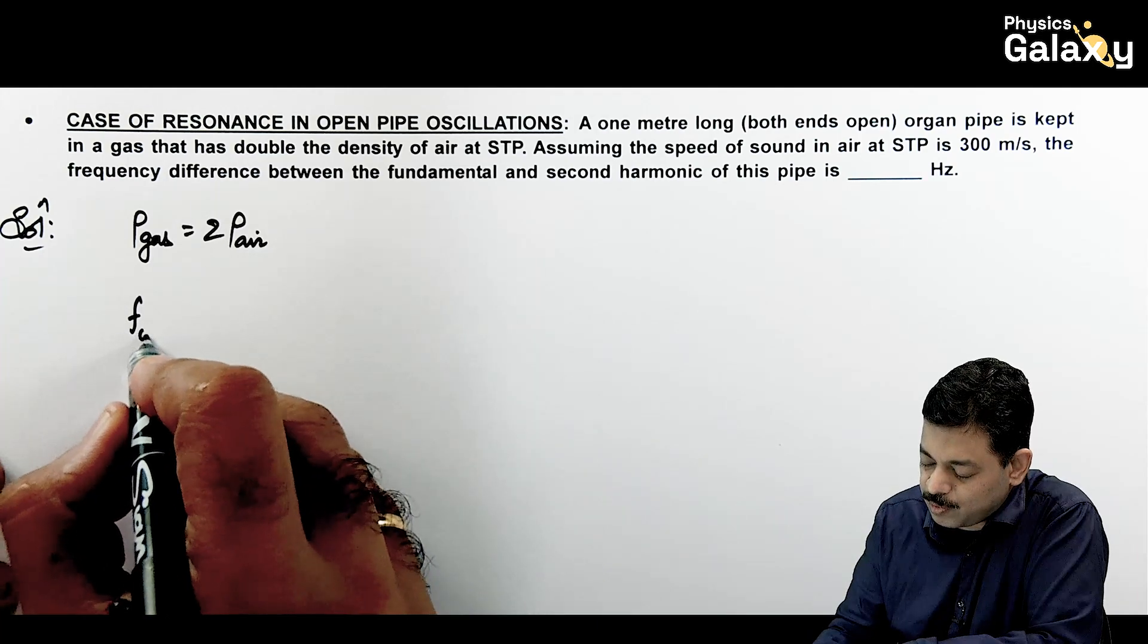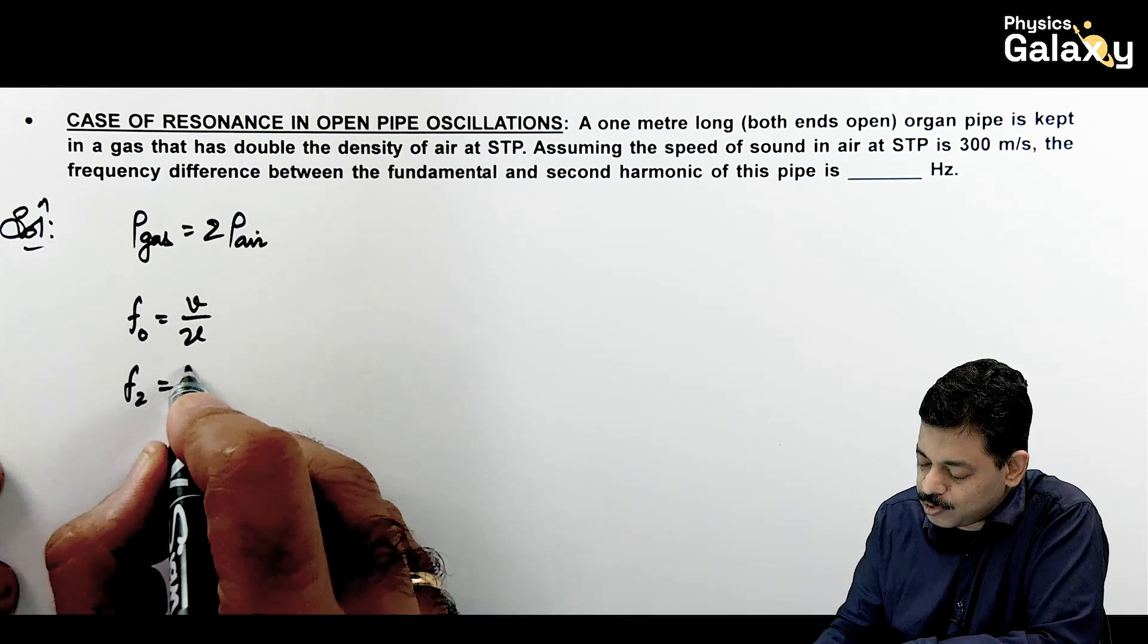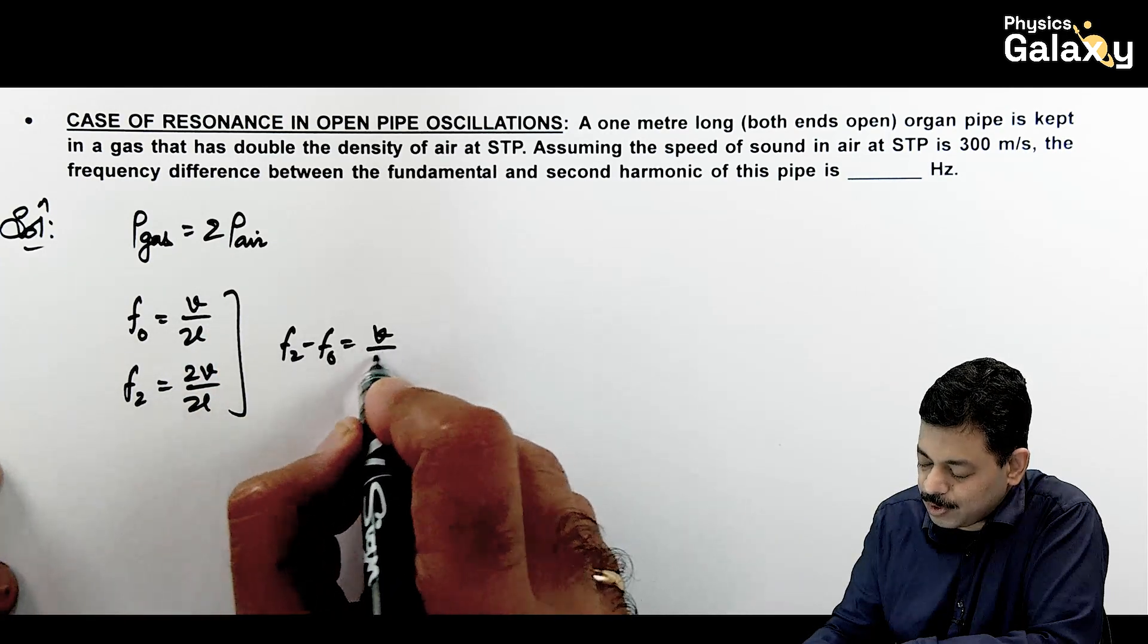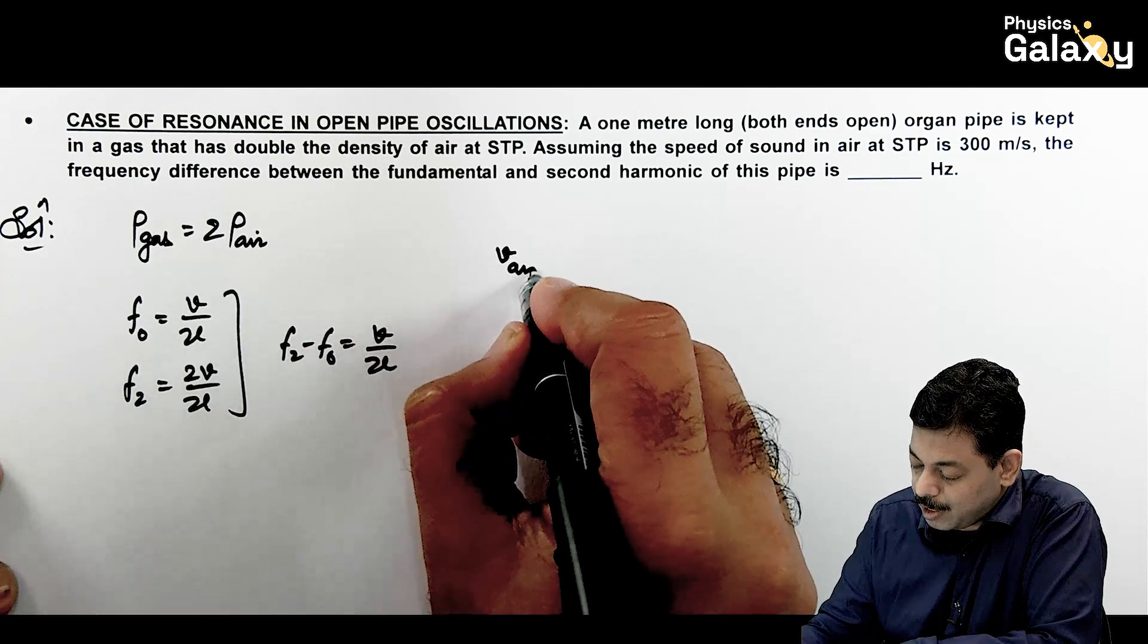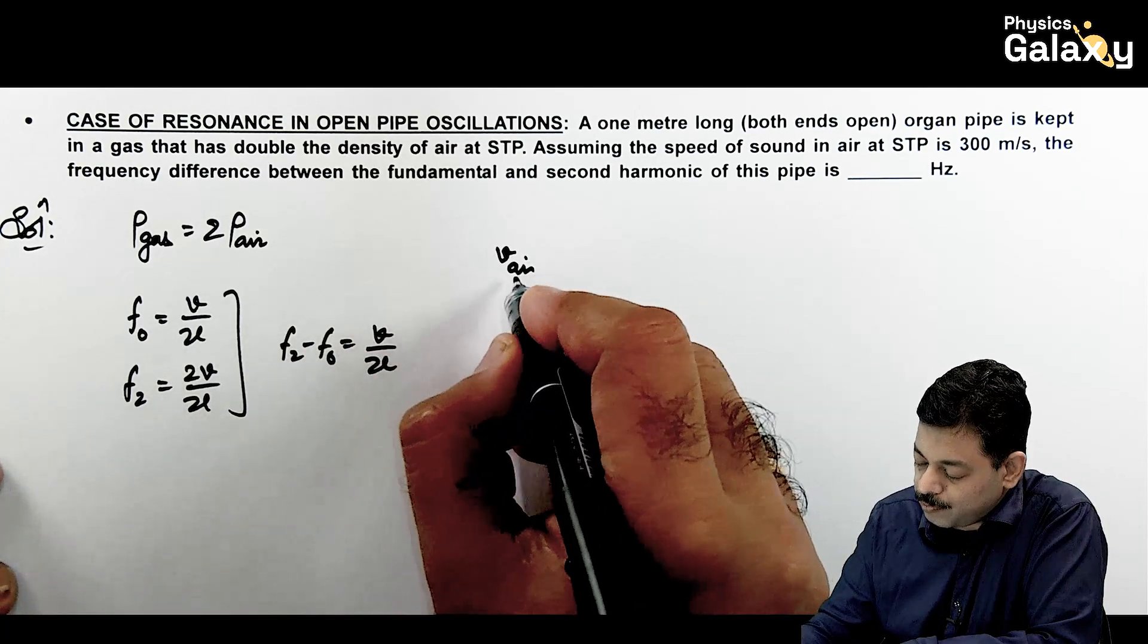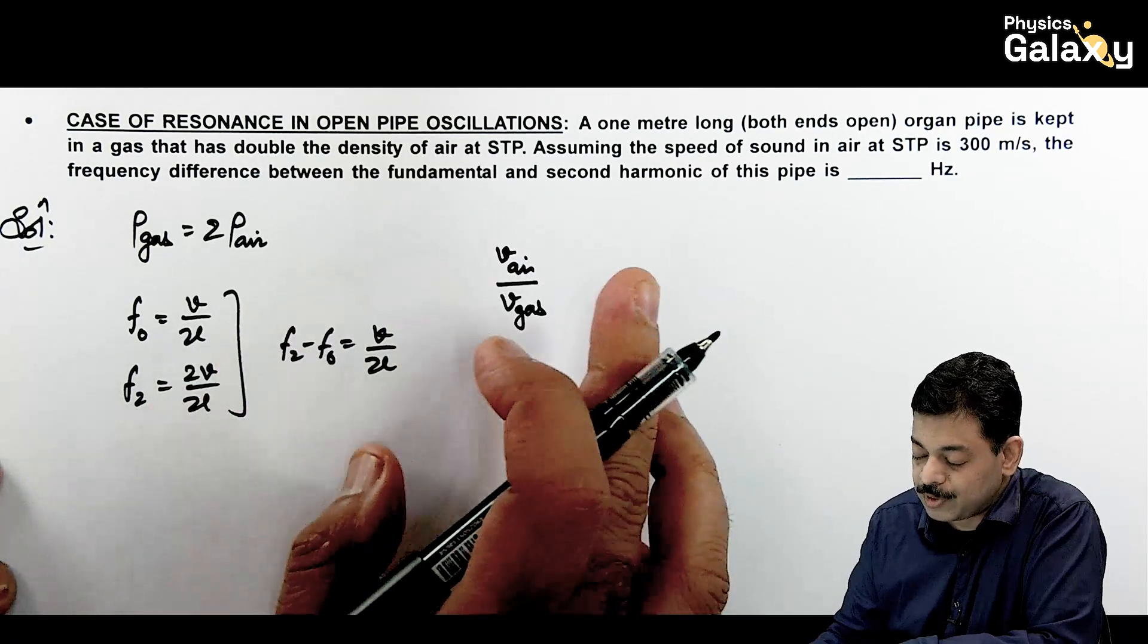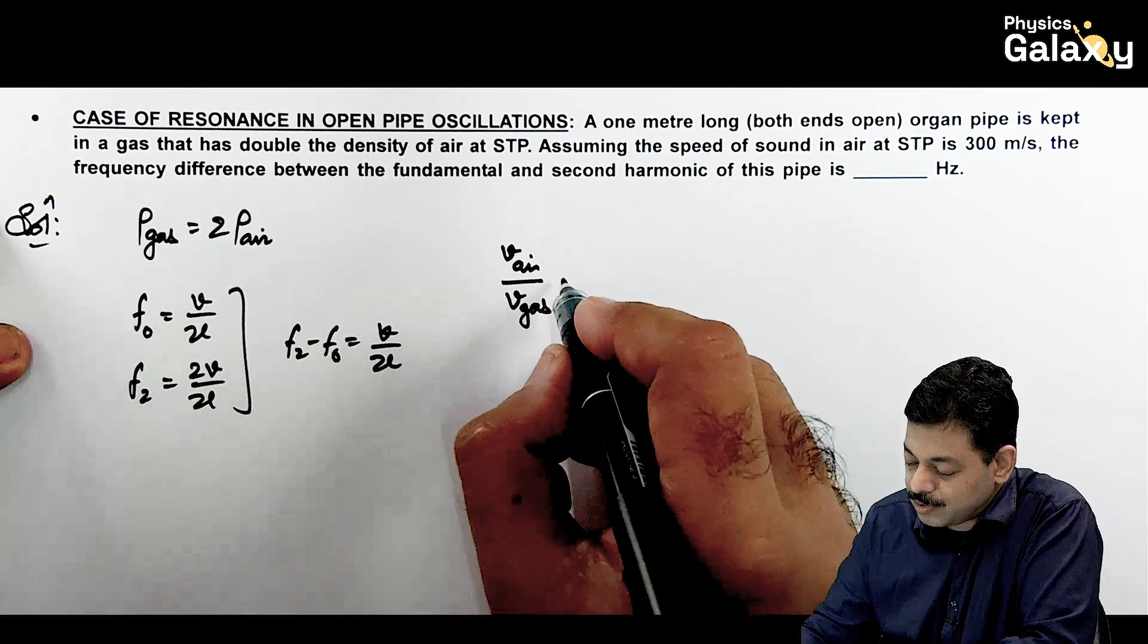So if we see fundamental frequency you know very well fundamental frequency or second harmonic. Fundamental frequency is V by 2L. Second harmonic f2 is 2V by 2L. So directly aap ye keh sakte hain f2 minus f0 is equal to V by 2L. Toh sabse pehle aapko speed nikalni padegi. So speed in air upon speed in gas agar hum dekhein. Temperature is same for the two because it is talking about STP.